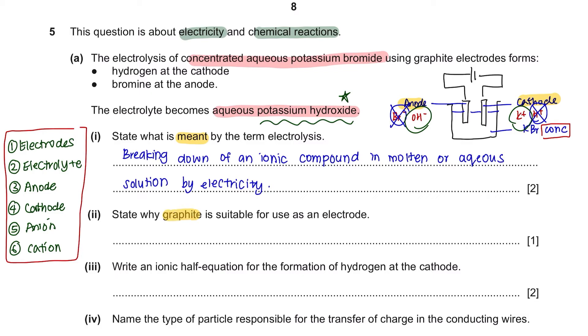Part 2. State why graphite is suitable for use as an electrode. Graphite electrodes are used in electrolysis because graphite is a great conductor of electricity, and most importantly it is inert. Inert means that it is non-reactive.